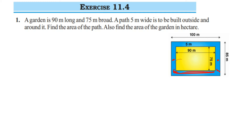Let us find out the area of the garden and the area of the garden including the path — two things we want to find out. Let us write this down. I'm talking about the garden only.